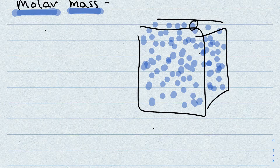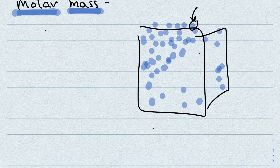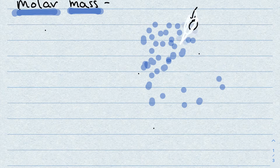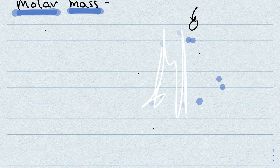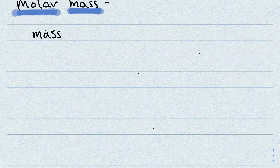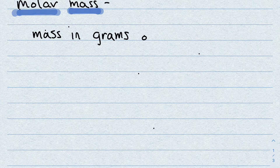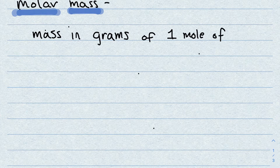So what scientists have done is figured out how much each atom and each molecule weighs, and that is called the molar mass. The molar mass is a unit you can use to count all of these incredibly tiny things by taking their mass and dividing by the molar mass. The molar mass is the mass in grams of one mole of material.